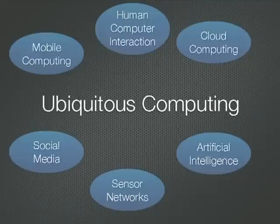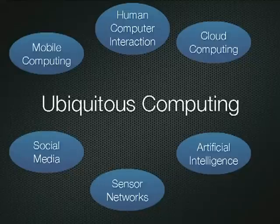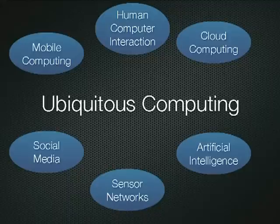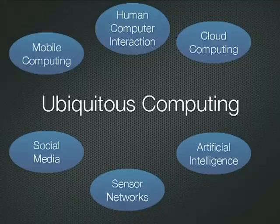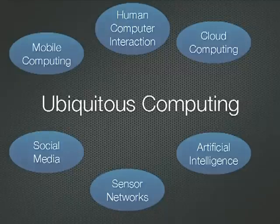The term was first coined in the late 80s, and we get ever closer to achieving this almost science fiction-like ideal. Ubiquitous computing encompasses several different areas of technology, mainly mobile, cloud, and social networks. There are also a few more things, including artificial intelligence, sensor networks for auto-discovery, and the way humans interact with computers. I'm going to explain all of these things in more detail as we go along.